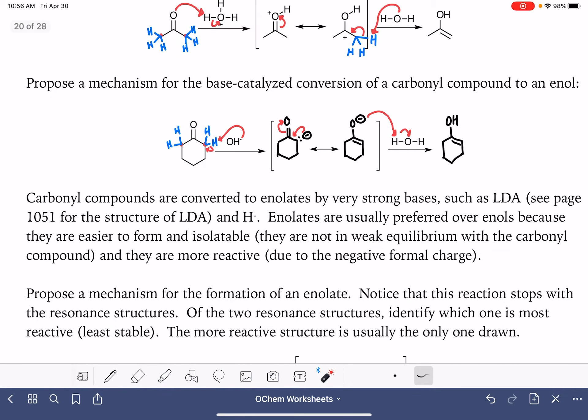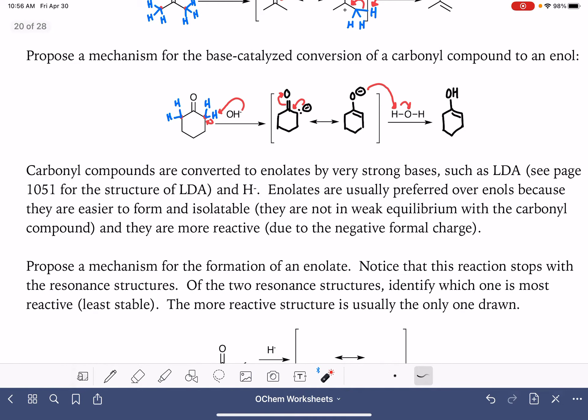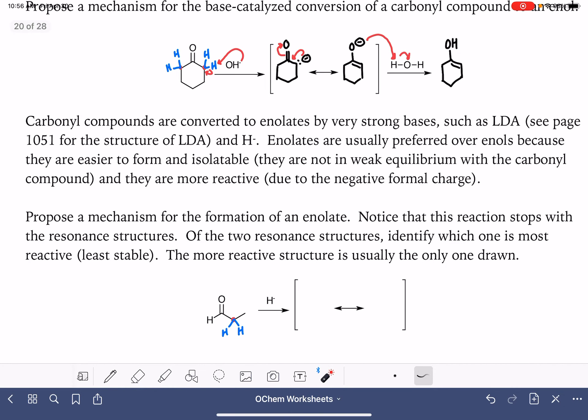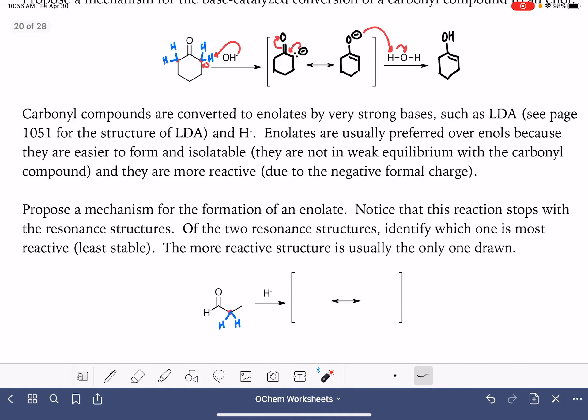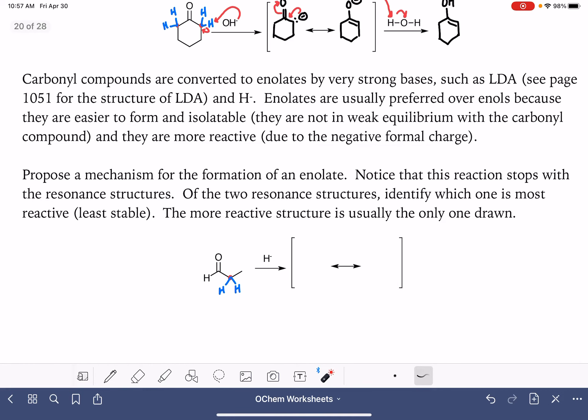If we want to convert into an enolate, we need to use a very strong base, such as LDA, lithium diisopropyl amine, or H minus, the hydride ions, such as LAH or NaBH4. Enolates are preferred by chemists over enols because they are easier to form, because they are isolatable, they're not in equilibrium with the carbonyl compound, which means we just produce them. And they are more reactive because they have a full negative formal charge.